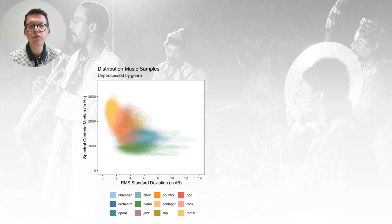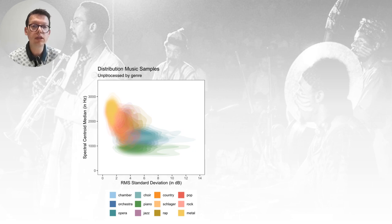The distribution of dynamic range and spectral shape is in line with reference data, with the trend that more classical genres have a larger dynamic range, while more modern genres have more energy in high frequencies and a flatter spectrum.